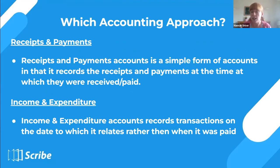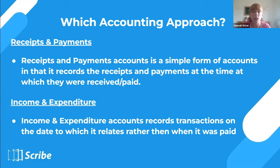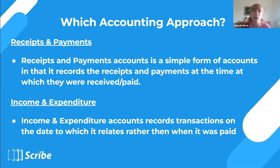There are two accounting approaches: receipts and payments, and income expenditure. Receipts and payments is the simpler form — it records receipts and payments at the time they are received or paid, regardless of when they relate to. It's a straightforward record of what happened when it happened, recorded in your cash book.